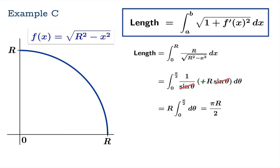It's πr over 2 which is of course exactly what we knew it had to be and so the arc length integral seems to be working in this case as well.